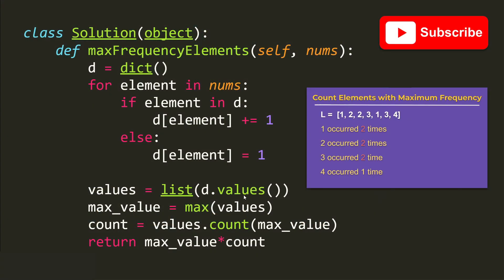Let's take a look at the solution in Python. Here is our method, maxFrequencyElements, and it takes in the nums array. It initializes the dictionary and traverses through the nums array. If the element is inside the dictionary, we increment its occurrence count by one; if not, we insert the key with a value of one. We then put all the dictionary values into a list using dict.values(), and get the maximum using max(values), stored in max_value.